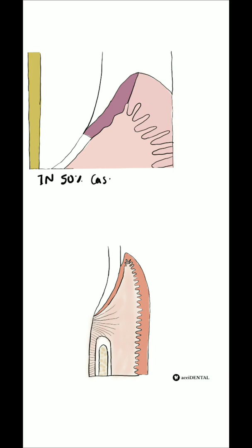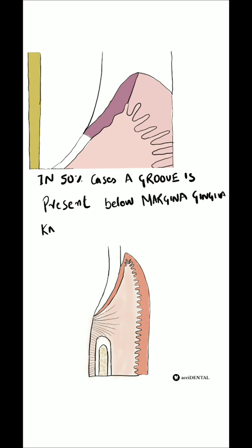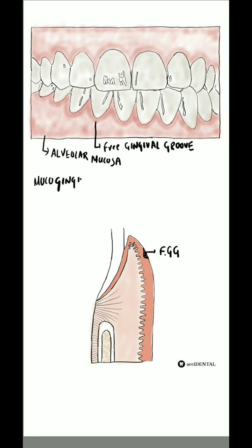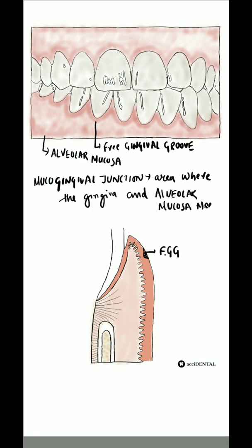In 50% of cases, a free gingival groove — a depression-like structure — is present between the marginal gingiva and the attached gingiva, differentiating the two. Next is the mucogingival junction, which is the area where the gingiva and the alveolar mucosa meet, separating the gingiva from the alveolar mucosa.